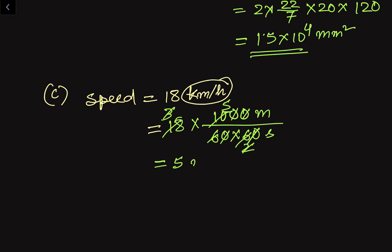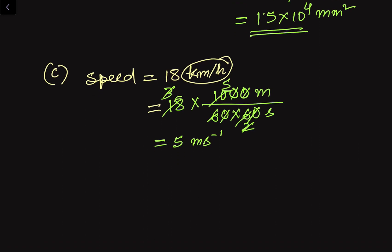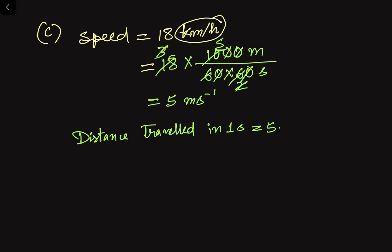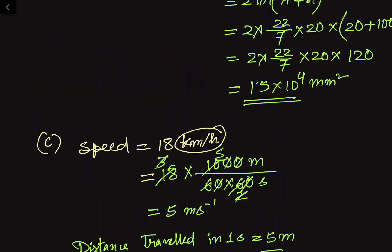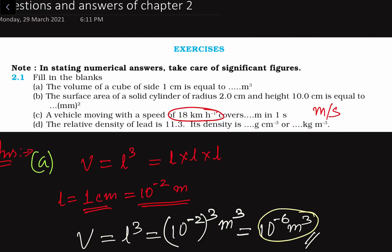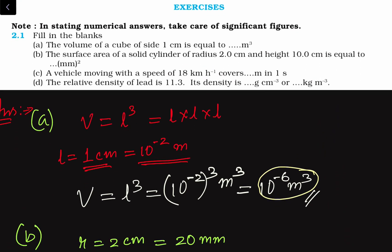This gives us 5 meter per second. So the speed is 5 meter per second, meaning the vehicle moves at 5 m/s and travels a distance of 5 meter in 1 second. You have to put 5 meter in the blank.